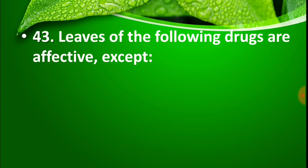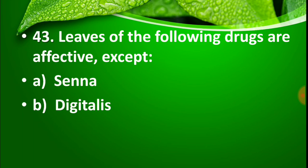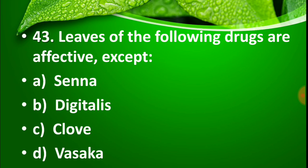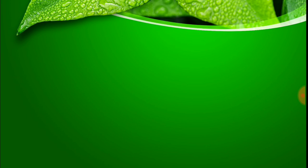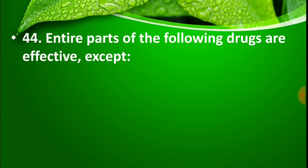Question number 43: Leaves of the following drugs are effective — except? Option A: Senna, Option B: Digitalis, Option C: Clove, Option D: Vasaka. The right answer is Option C, Clove. Clove leaves are not mainly used — mainly its flower buds and fruit are used.